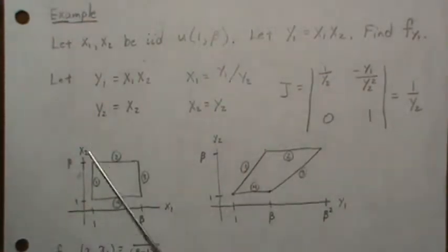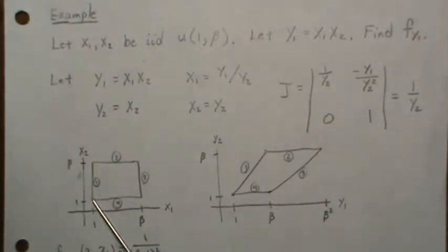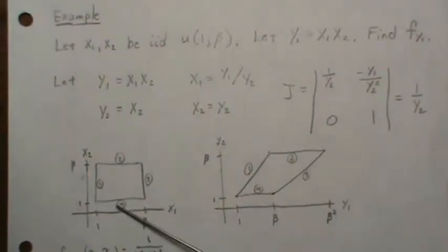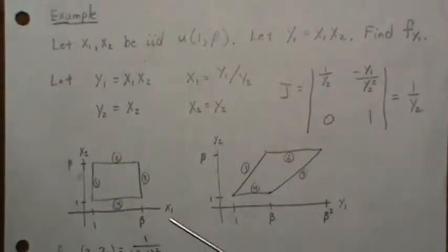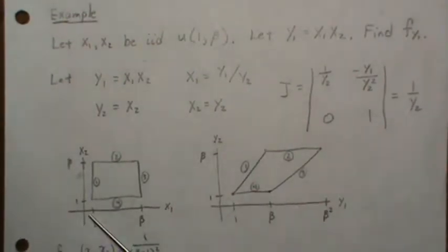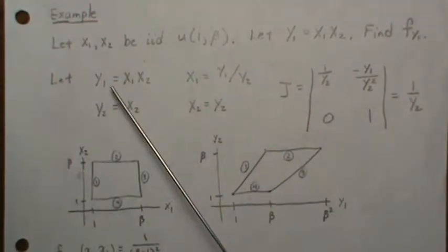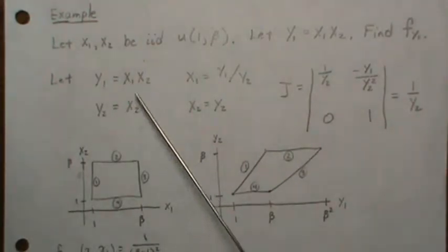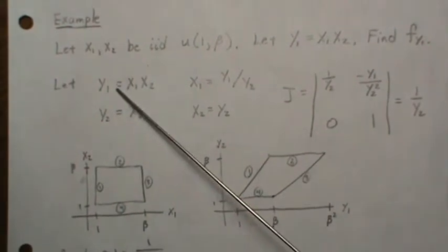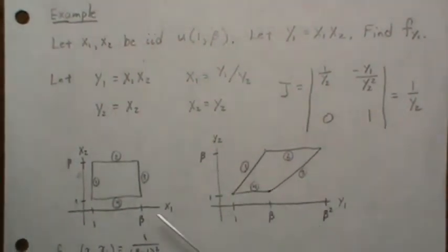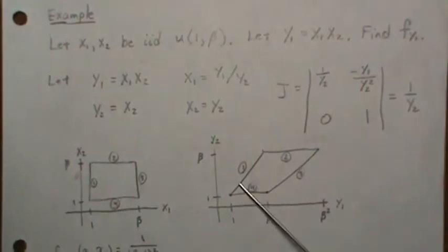Here, x1 and x2 are independent from 1 to beta, so the region is square. We look at the borders, and borders are mapped to borders over here. In this case, if x1 is 1 and x2 ranges freely from 1 to beta, then y1 and y2 are the same, so this is a slope of 1. So this boundary goes to this boundary.